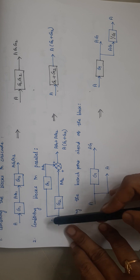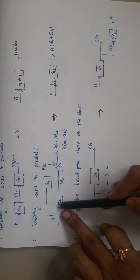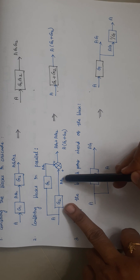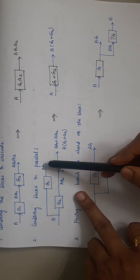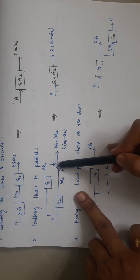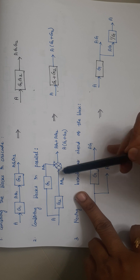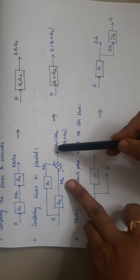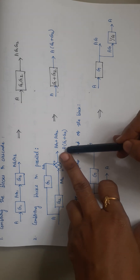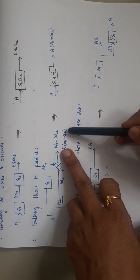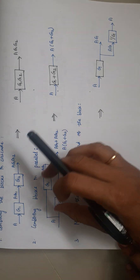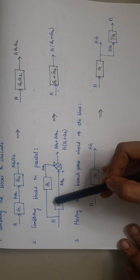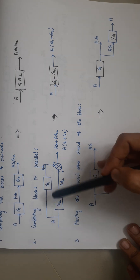Here the input A is given to G2 as well as G1. These elements should get multiplied, so A·G2 and A·G1 are connected to a summer. Both signals have a positive sign in the summer, so we add them: A·G1 + A·G2. Since A is common, taking A outside gives A·(G1 + G2) as the output.